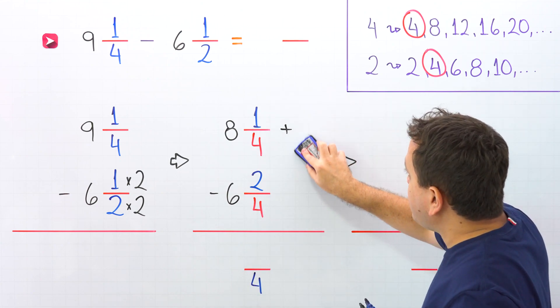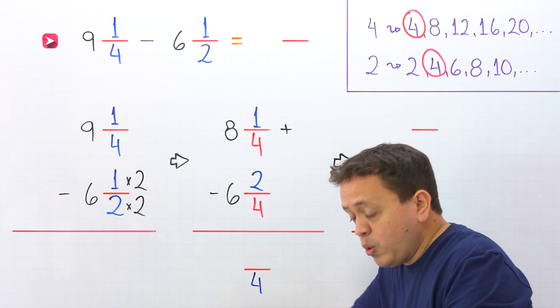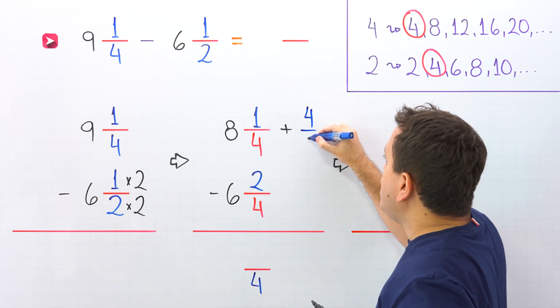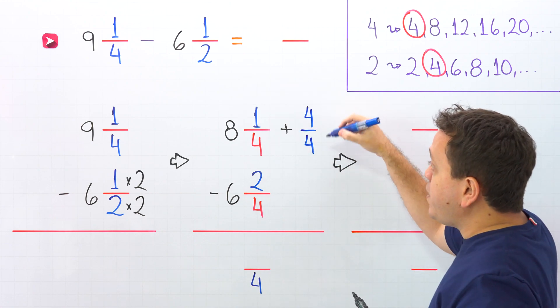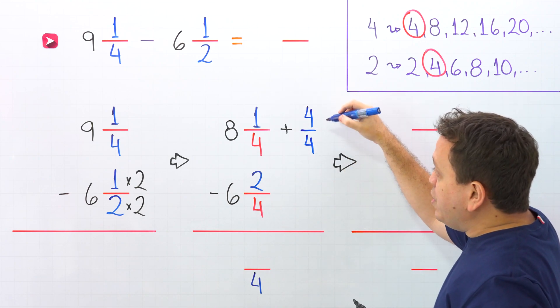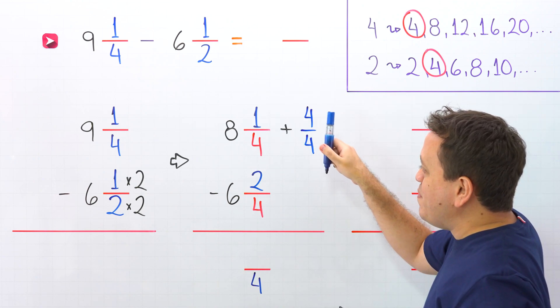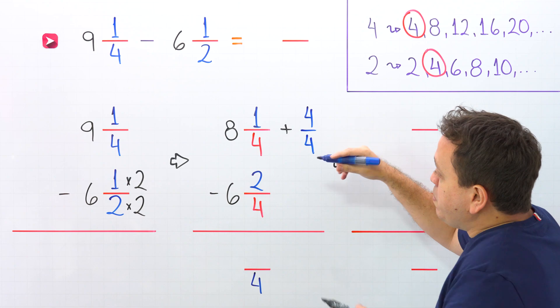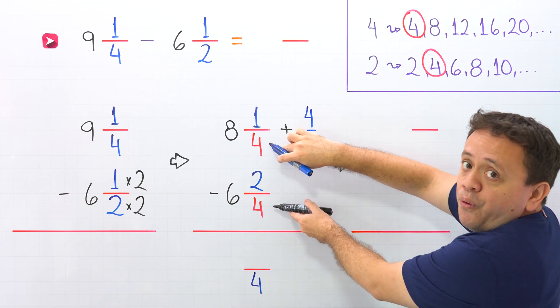And that fraction will be 4 fourths. Don't forget that we can also see a fraction as a division. And 4 divided by 4 gives us 1. We are using the number 4, because these two fractions have a denominator of 4.